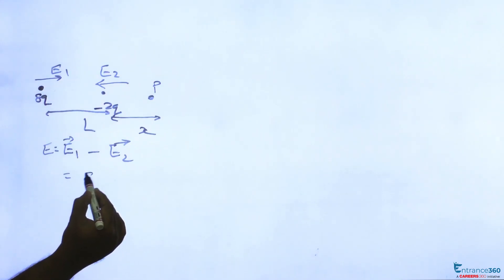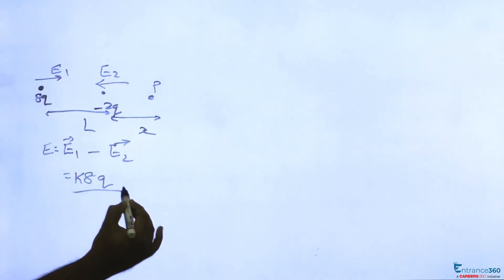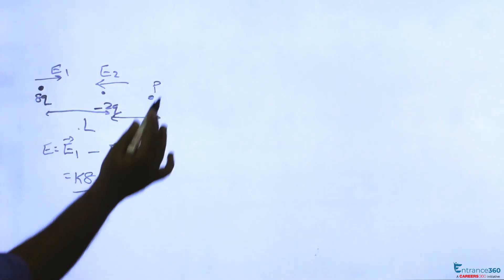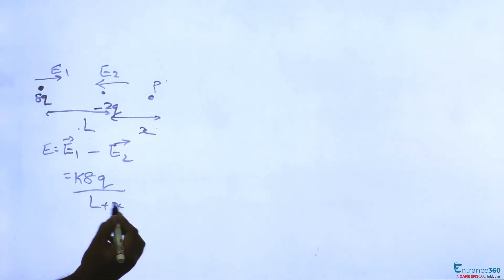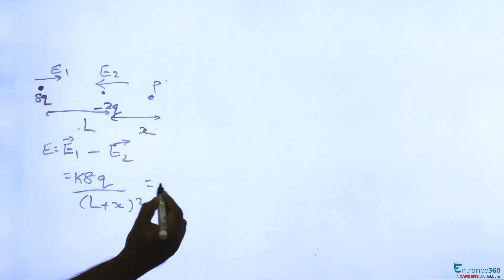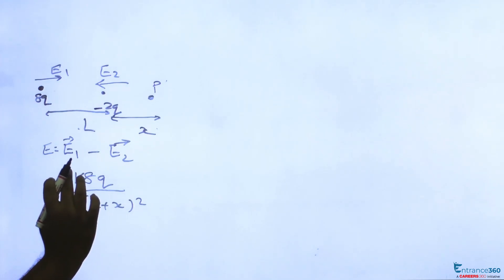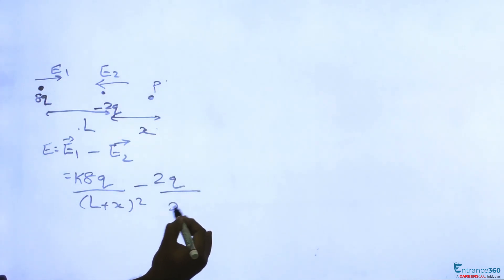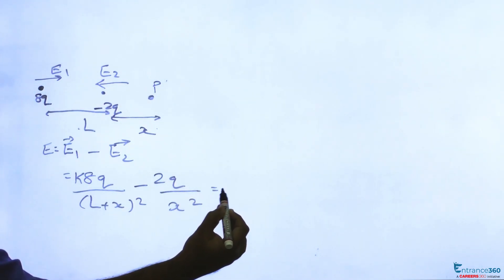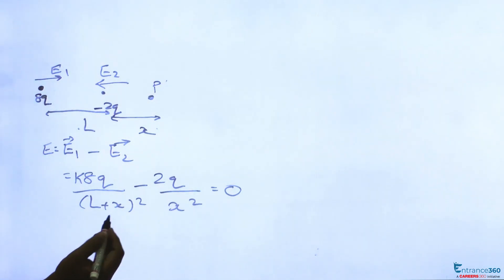E1 due to 8q is k into 8q by (L plus x) whole square. We are finding electric field at point P, which is equal to E2 due to charge 2q, which is 2q by x square, which equals 0 as per the requirement.